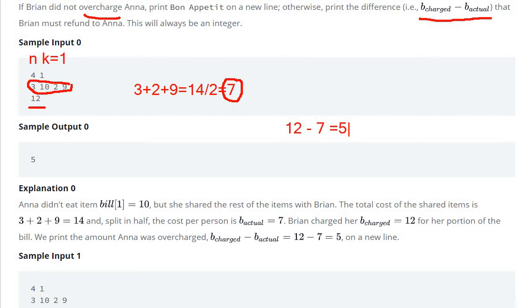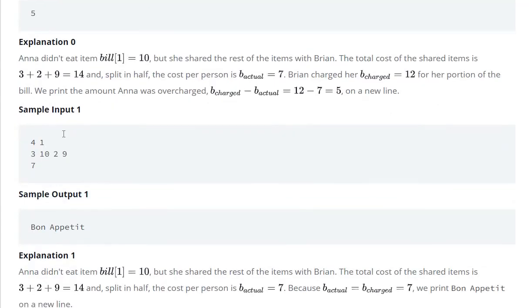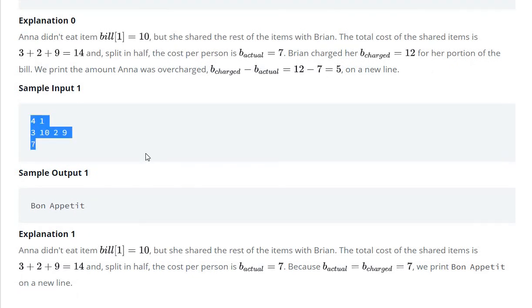In the next case, the exact bill is given as 7, so we have to print Bon Appetit. So let's see how can we code for this.